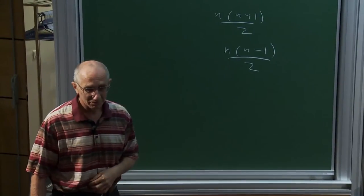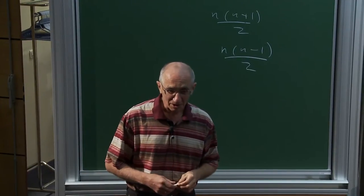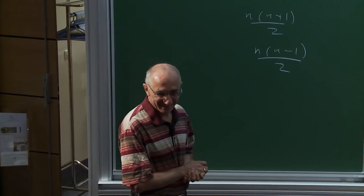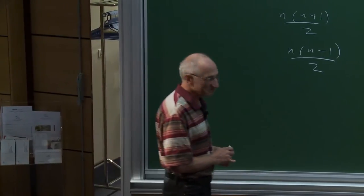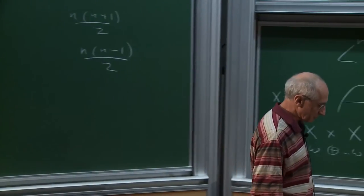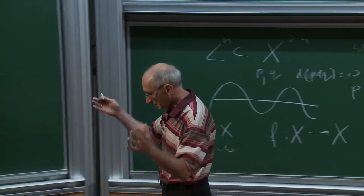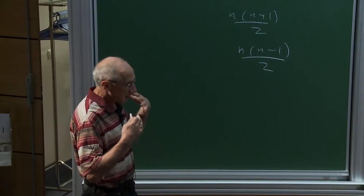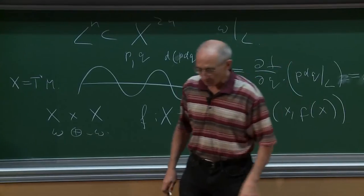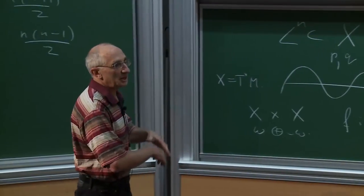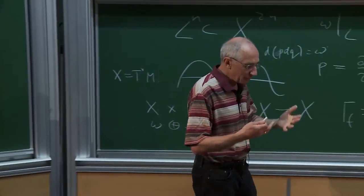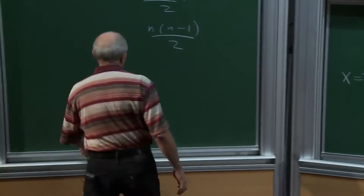The group of automorphisms acts transitively on any finite set of points and much more — it's an extremely huge group. Suppose you want to construct a symplectic structure on a manifold. A necessary condition is existence of a non-degenerate (not necessarily closed) two-form, which is the same as reducing the tangent bundle to the symplectic group, homotopy equivalent to the unitary group. This is topologically equivalent to constructing an almost-complex structure on the manifold — a purely topological condition.